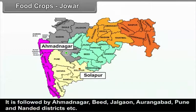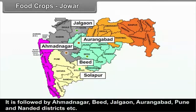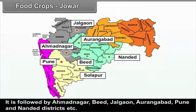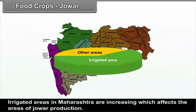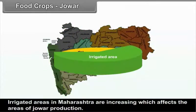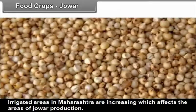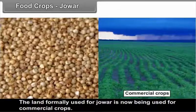Jowar production is also significant in Ahmadnagar, Bid, Jalgao, Aurangabad, Pune, and Nandurbar districts. Irrigated areas in Maharashtra are increasing, which affects Jowar production areas. Land formerly used for Jowar is now being used for commercial crops.